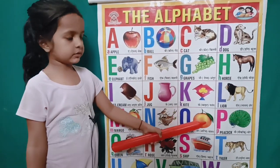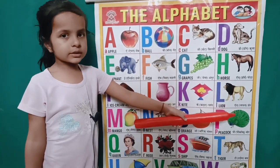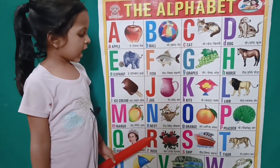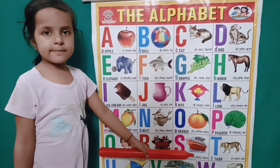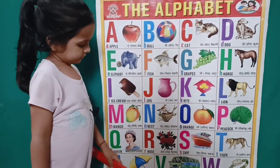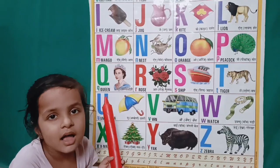O for orange, P for peacock, Q for queen, R for rose, S for sheep, T for tiger, U for